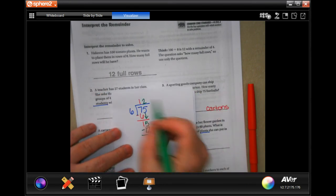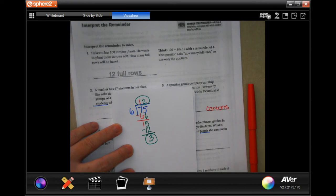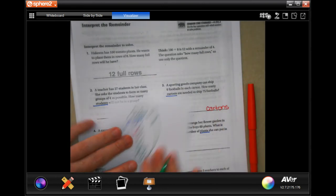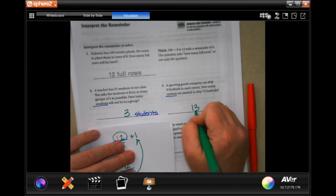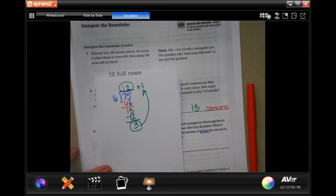Now, they're going to have those 12 cartons, but they have another 3 footballs they have to send. They can't just send those 3 footballs into the air and hope that they get there. They have to add 1 more carton. So it's going to be 13 cartons. Write your work down, guys.